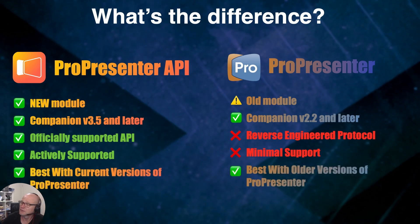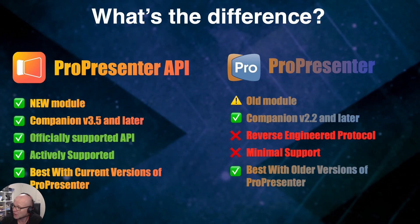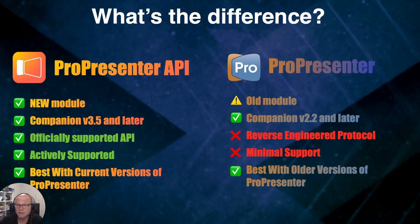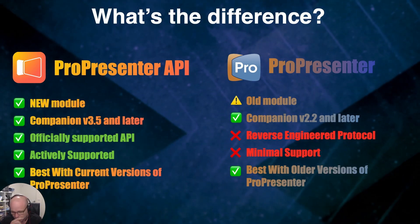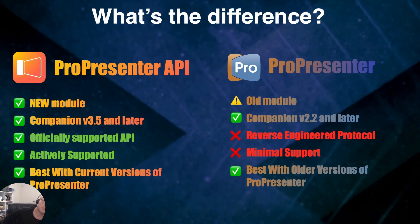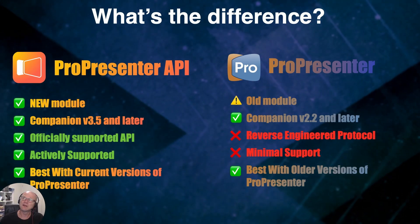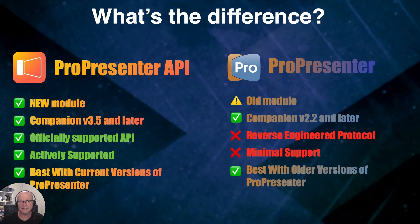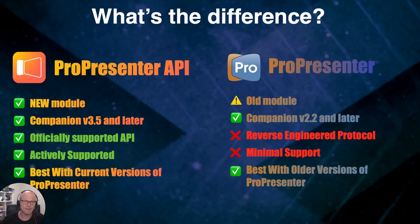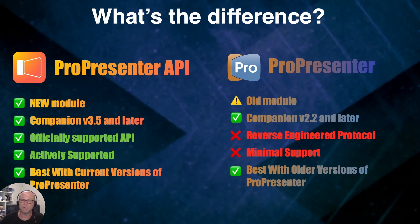The new API module works best with current versions of ProPresenter, while the old module works great with older versions. Before ProPresenter 7.9, you have to use the old module — it's your only choice. If you're a new user with the latest ProPresenter, probably stick with the API module. However, there are one or two features in the reverse-engineered protocol that are not yet supported in the officially supported API, so you might still be interested in the old module for those cases.